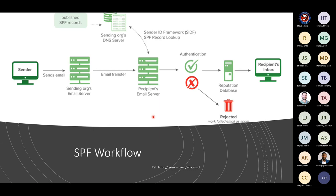Here's a workflow of how SPF works: the sender sends a message out of their organization's mail server. It goes through transport agents before ending up in the recipient's email server. That server, if it supports SPF — and most do now — does a DNS check back to the sending organization's DNS server. If it returns an IP address that is valid and on the list, it passes. If not, it may reject or mark the message. Just because it's rejected doesn't necessarily mean it ends up in trash or gets bounced back, but that can happen.